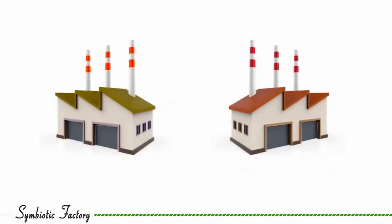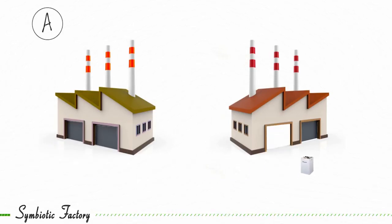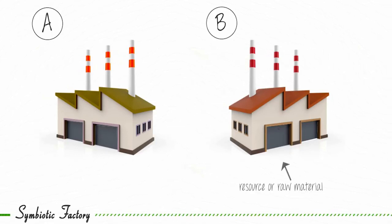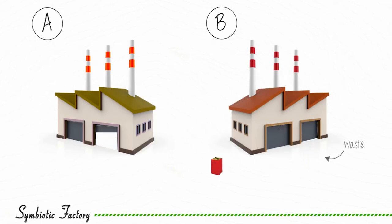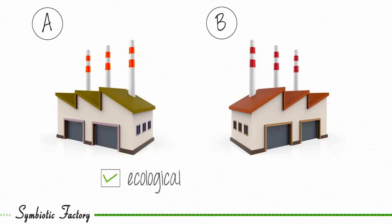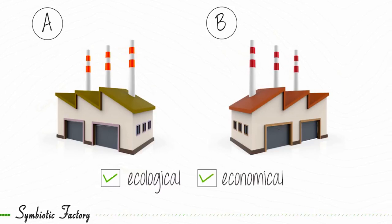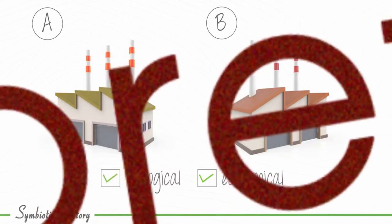Symbiotic factory refers to a system in which the waste of one factory, say A, is completely utilized by another factory, say B, as its resource or raw material. And the waste of factory B is completely utilized by factory A as its resource. Such a concept sounds ecologically brilliant and economically smart as a whip. However, it inevitably remains theoretical.